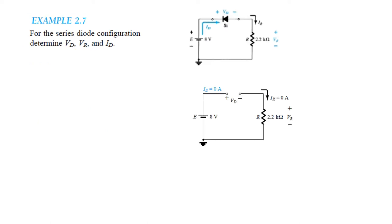For Example 2.7, we need to find VD, VR, and ID. Now this diode is reverse biased — the battery positive terminal is connected to the negative terminal of the diode, making it reverse biased. Since the circuit is an open circuit with no current flow, ID equals 0 and IR is also 0.